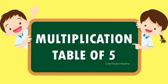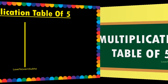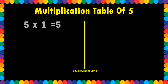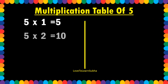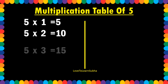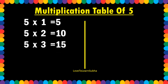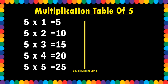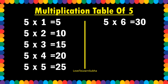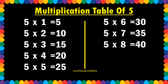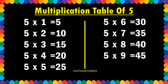Multiplication table of 5. 5 1s are 5, 5 2s are 10, 5 3s are 15, 5 4s are 20, 5 5s are 25, 5 6s are 30, 5 7s are 35, 5 8s are 40, 5 9s are 45, 5 10s are 50.